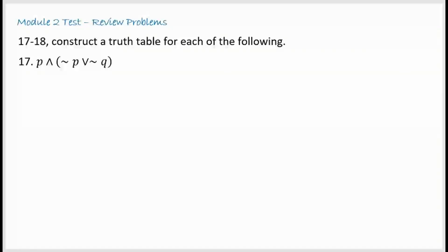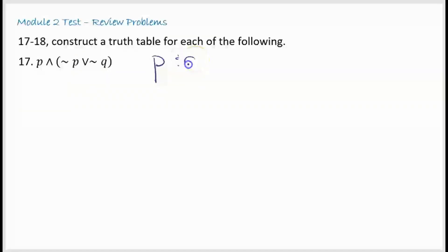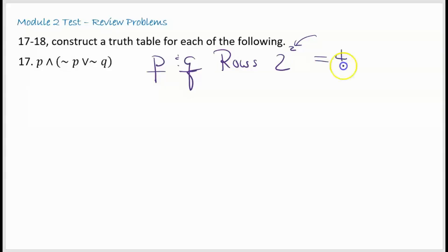For problems 17 and 18, we're supposed to construct a truth table for each of the following. The things you need to know to construct a truth table: first, how many component statements do you have? This tells us how many rows we need. We have P and not P, which is still just P, and not Q, which is just Q. So you only have components P and Q. That means 2 to the second power — four rows.